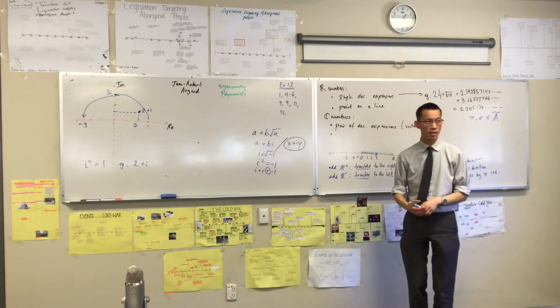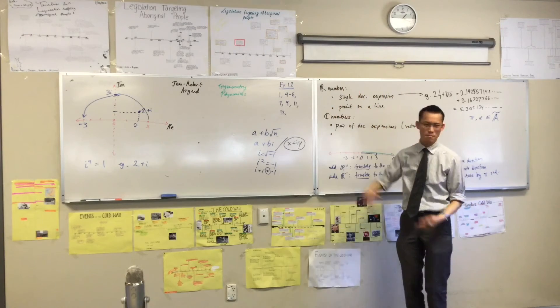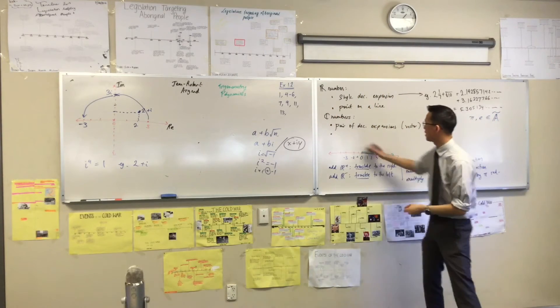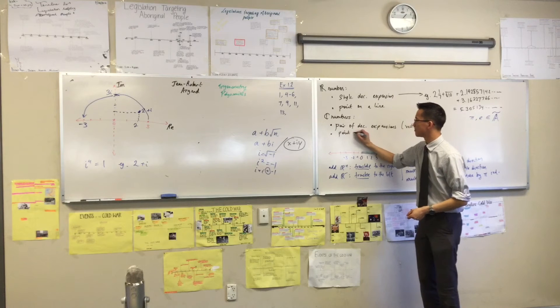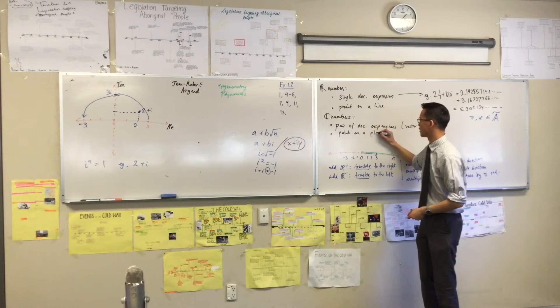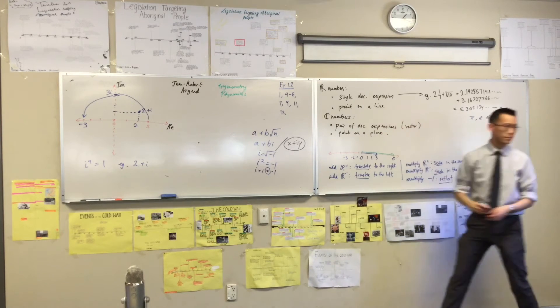They're points on an Argand diagram. More generally speaking, it's just a plane. Anything two-dimensional. So it's a point on a plane. Does this make sense?